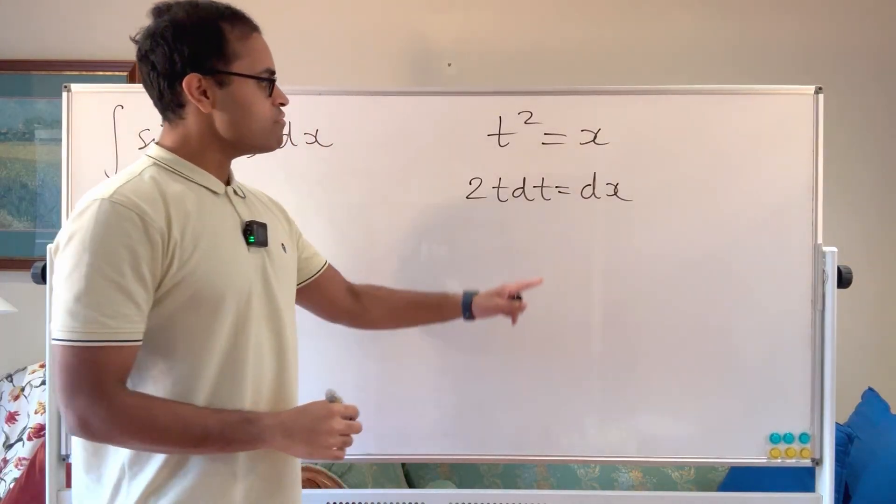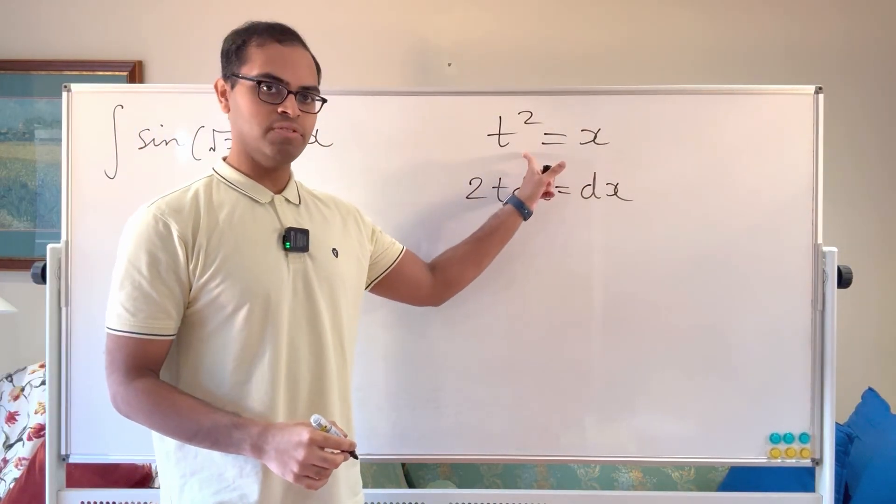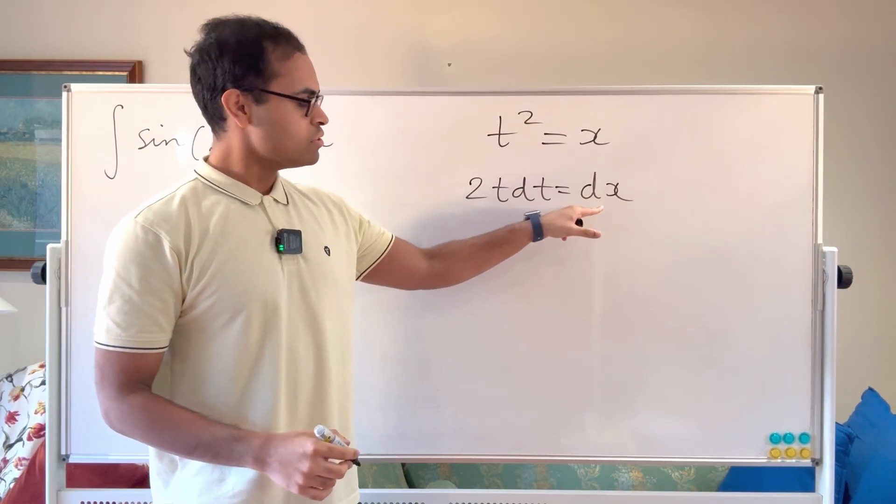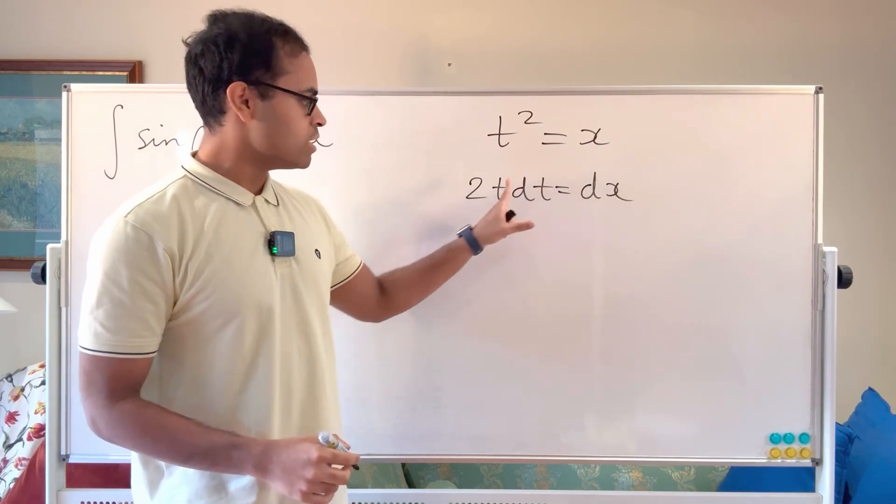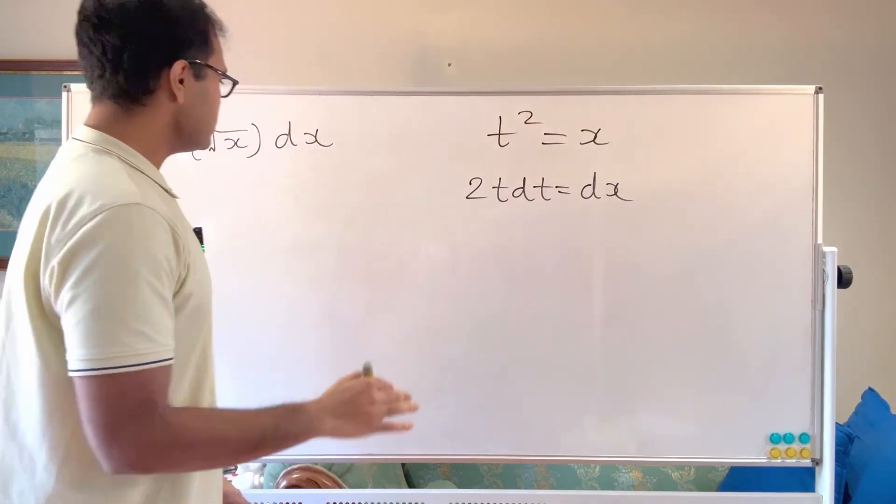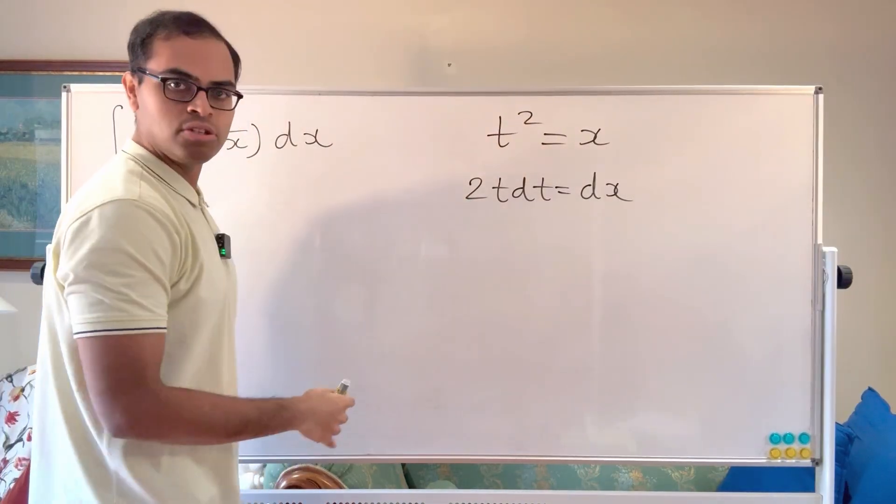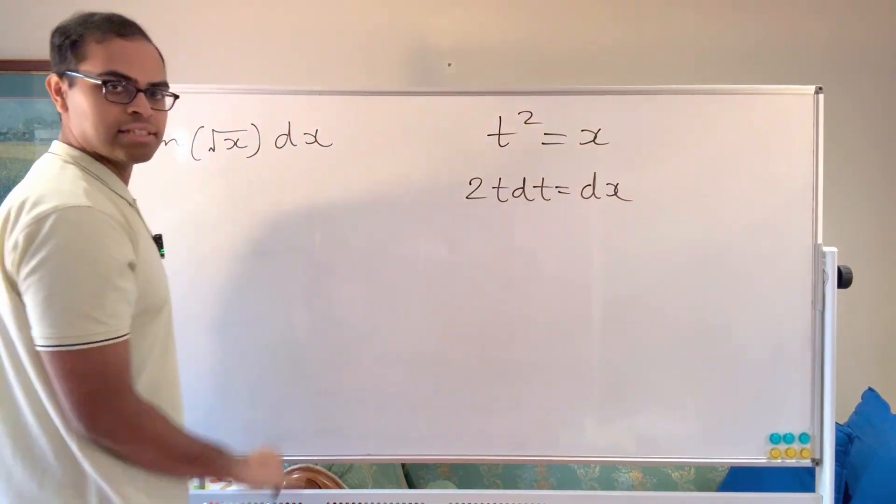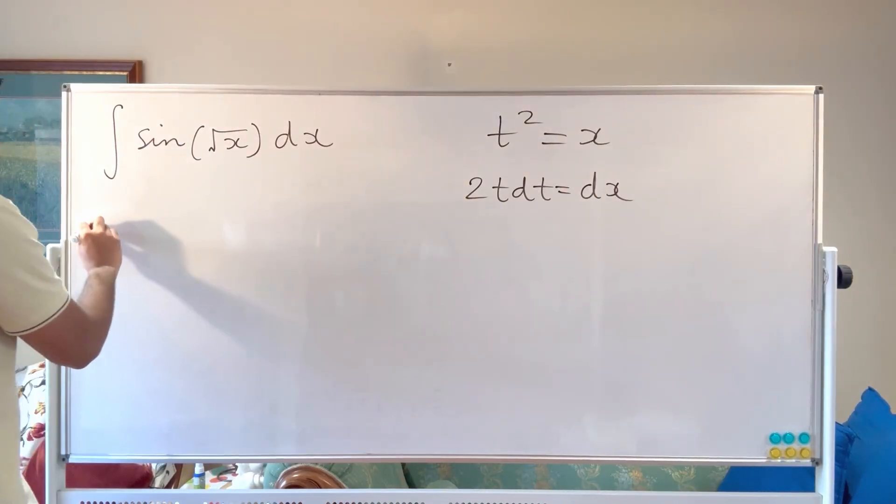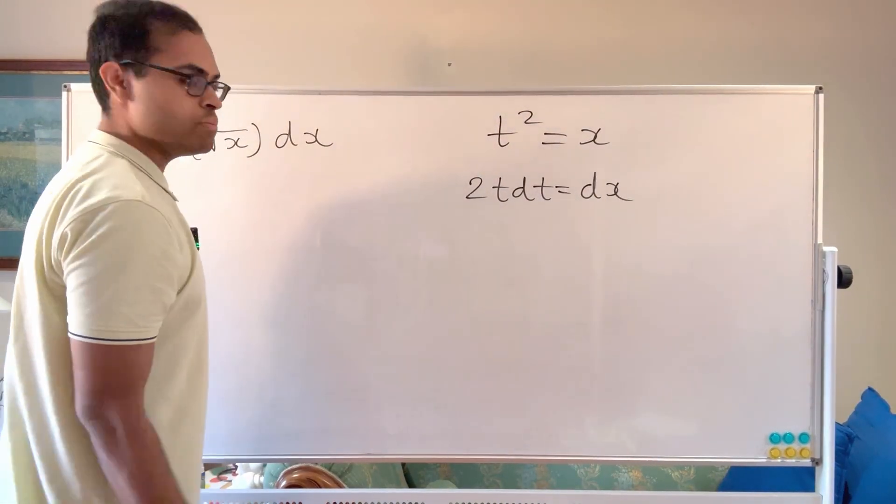Now what I've done here is I've written t so that x is a function of t. That way we find dx in terms of t and dt. We don't have to see something in front of the dx and then try to leverage that to find the right substitution. We can just immediately write the dx in terms of t and dt and of course the root x is just going to be t.